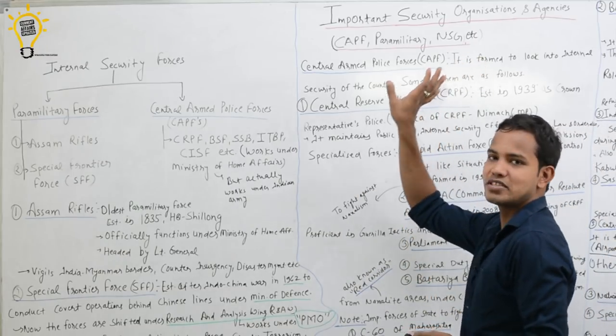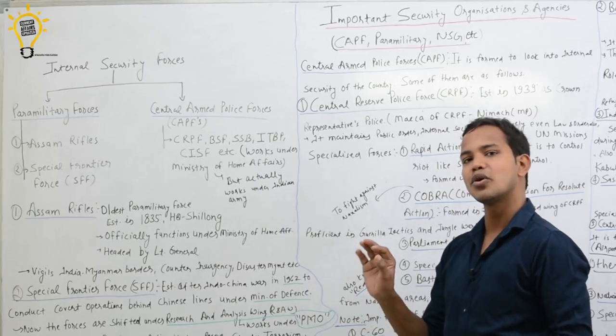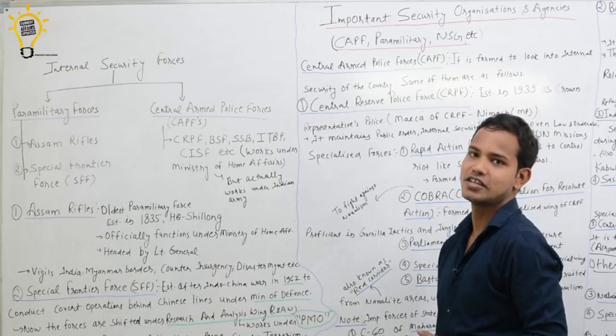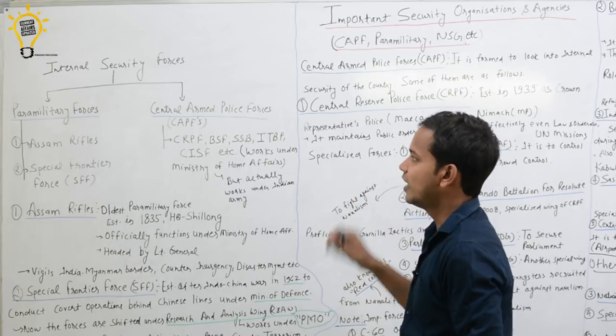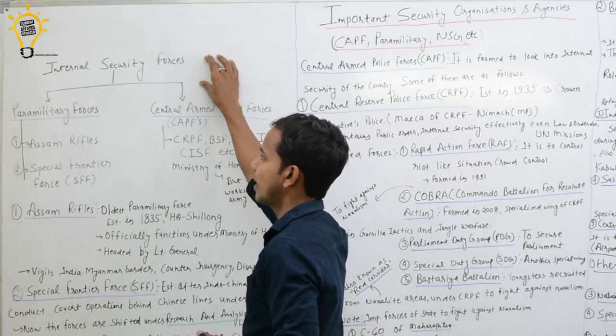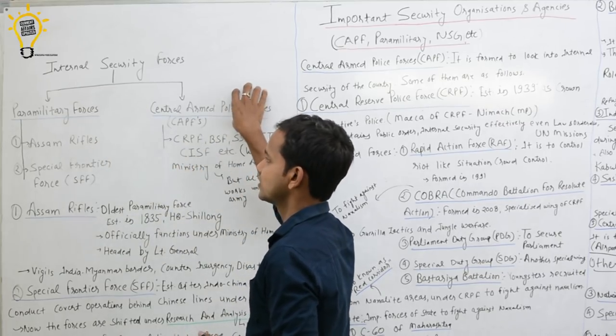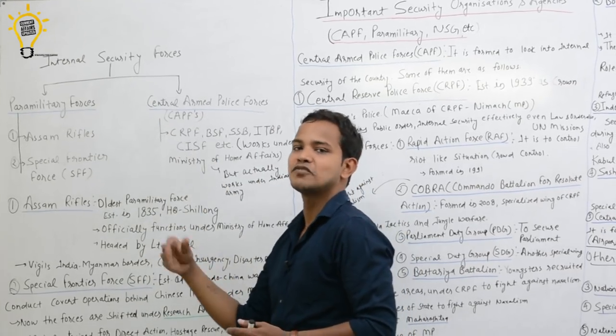We deal with security agencies. They will be internal security. External security is mainly armed forces, especially army, navy and air force. We talk about internal security agencies. Let's start with India's internal security forces which are bifurcated into two parts: paramilitary forces and central armed police forces. You are very confused.